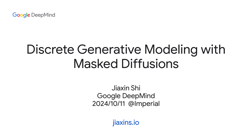Today I'm going to talk about mask diffusion models for discrete generative modeling. This is a kind of diffusion model for discrete data. It's been in the literature for a while, but people didn't figure out how to use this model properly. I'm going to talk about recent work that tries to bridge the gap between the theory and practice of mask diffusion.